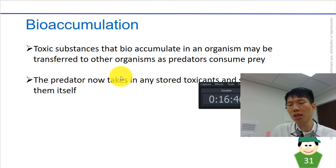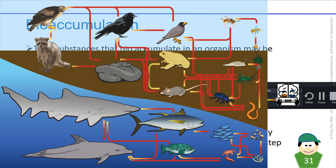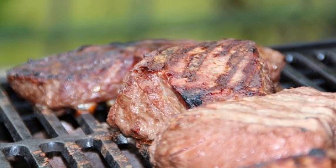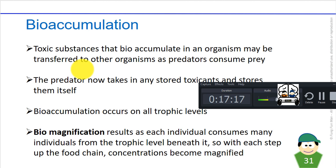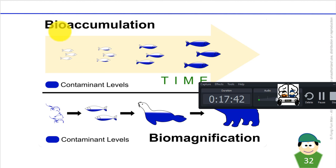Bioaccumulation takes place at all trophic levels in the food chain, and since individuals consume many organisms from lower trophic levels, with each step up the food chain the concentration of toxicants becomes magnified — this is called biomagnification. Top predators like birds of prey end up with the highest concentrations of pesticides, as DDT moves up from water to algae to plankton to small fish to larger fish and finally to fish-eating birds.